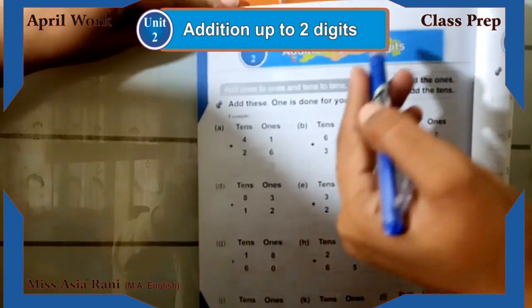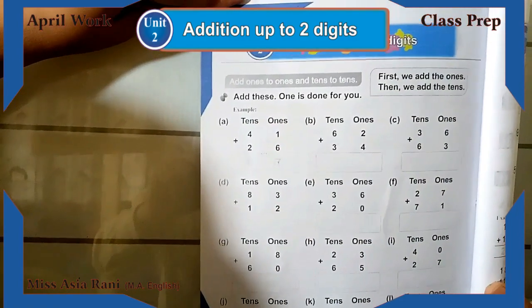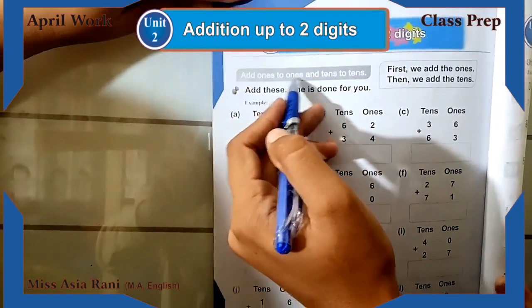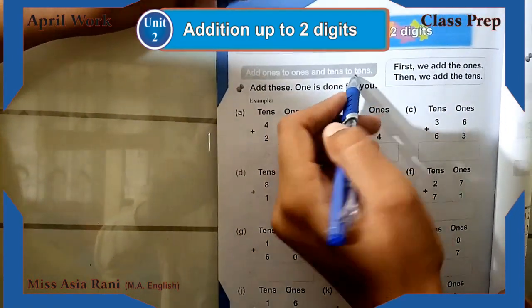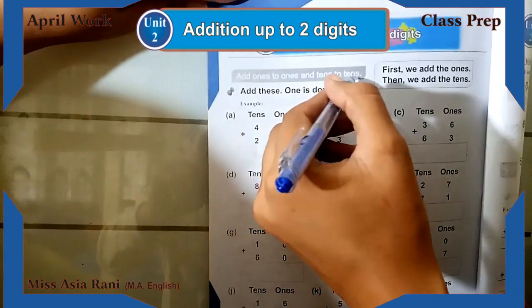Unit number two: addition up to two digits, page number 24. Add ones to ones and tens to tens.